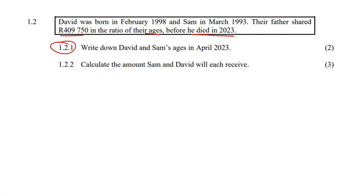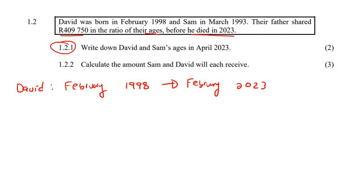The first question says: write down David and Sam's ages in April of 2023. Let's start with David. He was born in February 1998, so in February 2023 he would be 25 years old. Because we are in April, he's already had his birthday, so he is 25 years old.